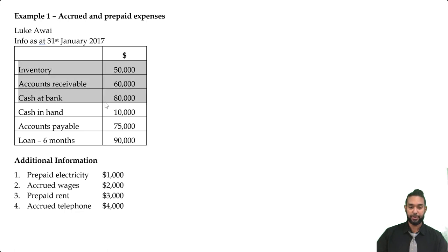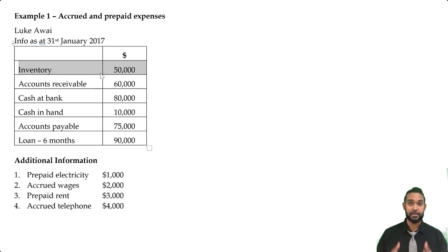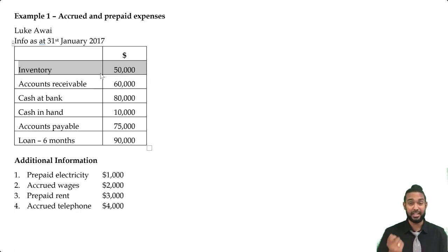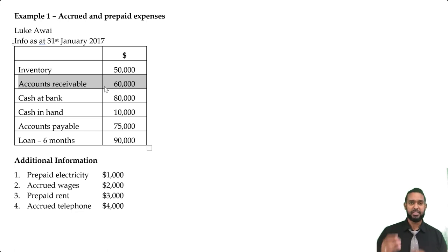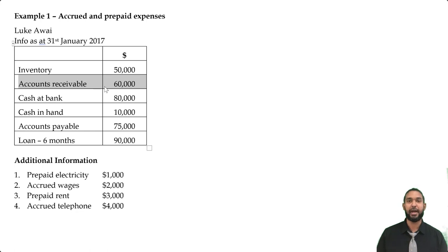They're listed in order of permanence — the most permanent asset listed first, going down in decreasing order of permanence or increasing order of liquidity. Liquidity is how easy it is to convert an asset to cash. Stock is the least liquid current asset because it's never guaranteed to be sold — it could become outdated or obsolete. Accounts receivable is also relatively permanent because there's always a risk that your debtors will not pay you back.